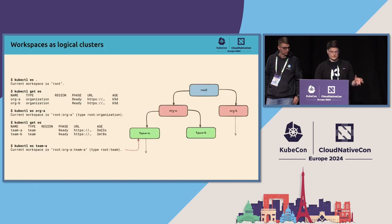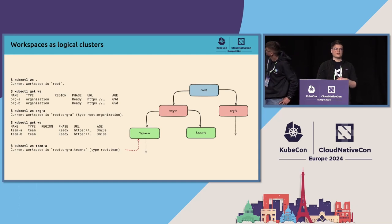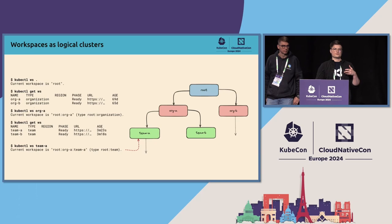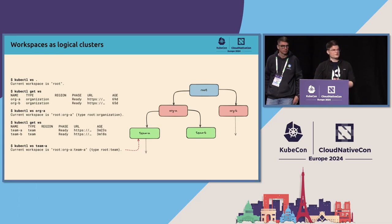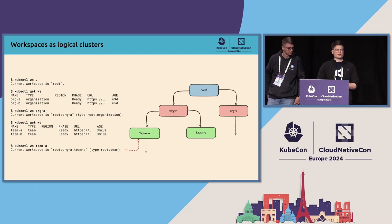So first, KCP implements something called logical clusters. Logical clusters are a way to provide Kubernetes APIs as a commodity. They are implemented as workspaces — each workspace has its own Kubernetes API. They are organized in a tree structure, and you can easily navigate them with a kubectl plugin we have written. Each of them has its own API types and resources. And now MJ will tell you about how to manage APIs in these logical clusters.